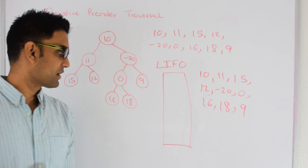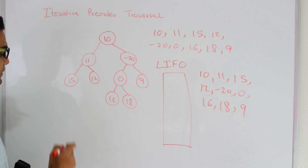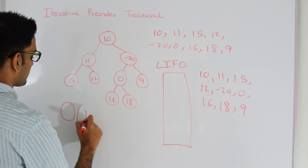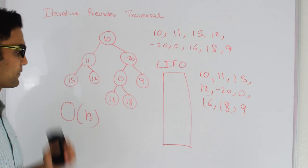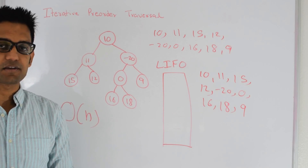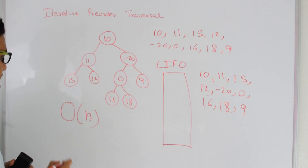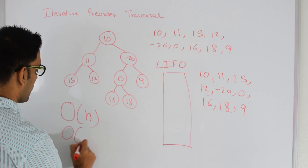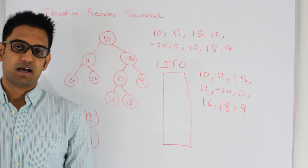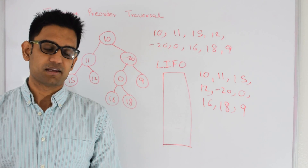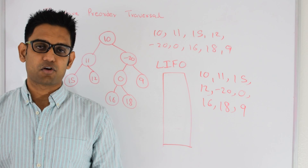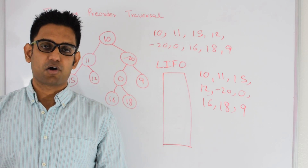How much time would this algorithm take? Since we are visiting every node once, the time complexity for this algorithm will be O(N). How much space would this algorithm take? The space depends on the size of the stack. In the worst case the size of the stack will be O(H), where H is the height of the binary tree, and in the worst case the height of the binary tree can be O(N).